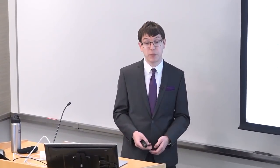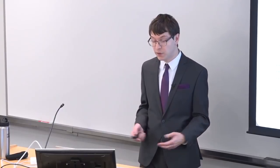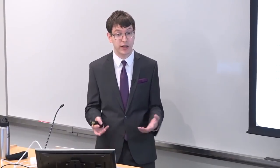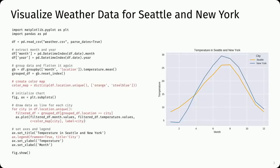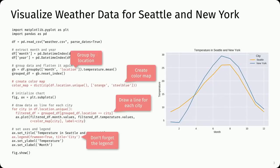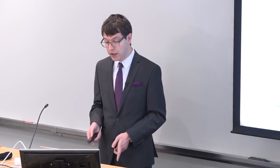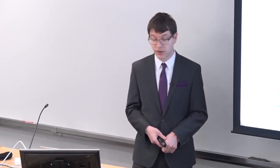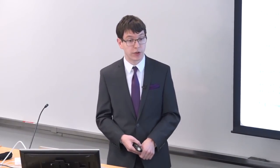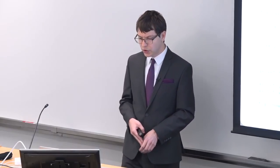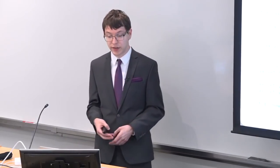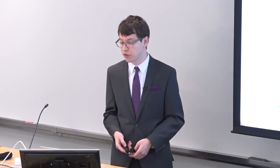There's a lot to be desired from making visualizations this way. This becomes particularly obvious when we want to compare the data for Seattle with something like New York City. Now we have to add another group-by by location, add a color map that tells us what the different cities should be represented with, draw a line for each city individually, and add a legend so readers know what the colors actually mean. A small change in what we want to visualize entails changes to both data processing and rendering.